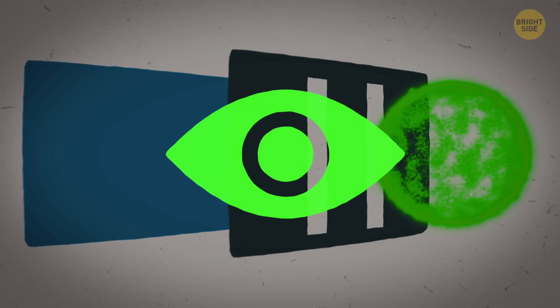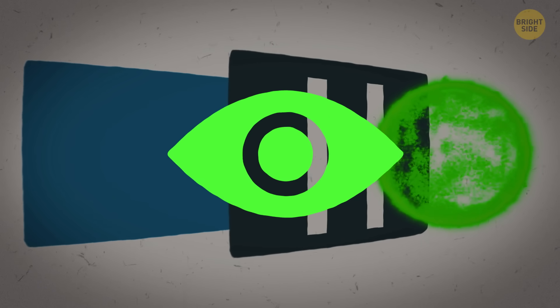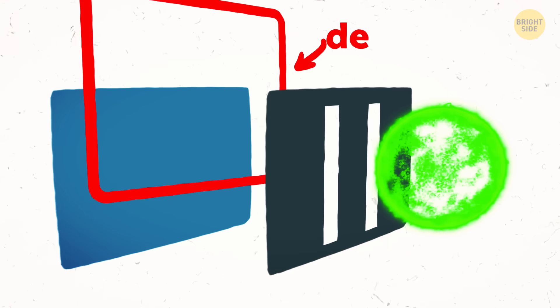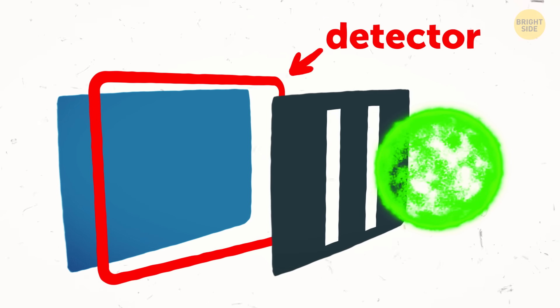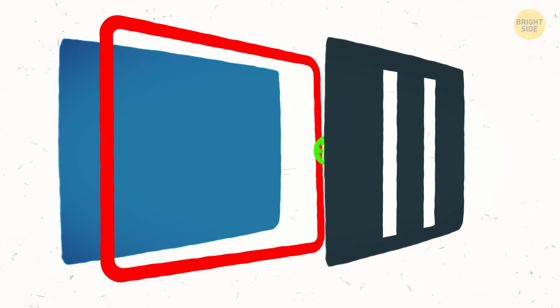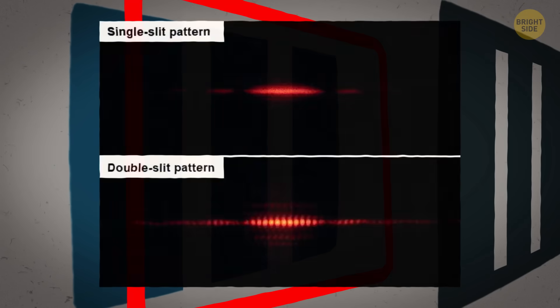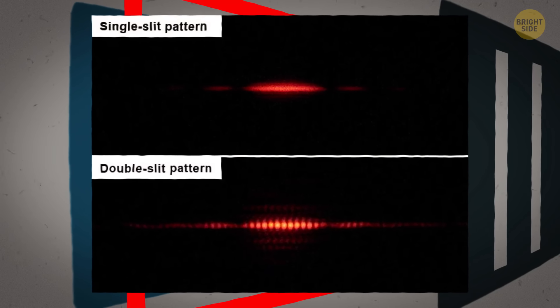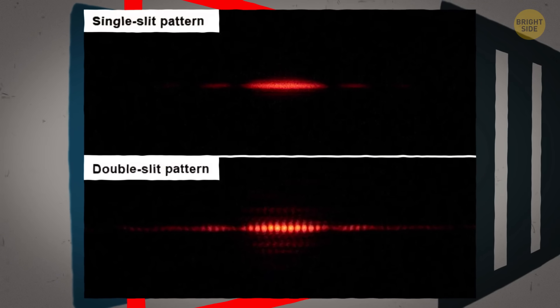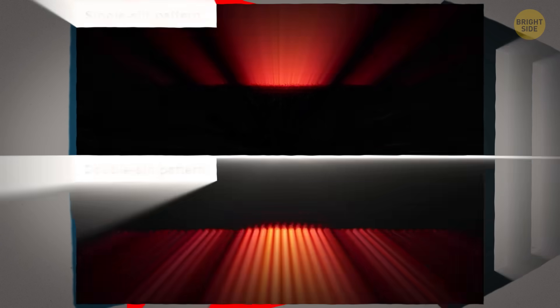Now, let's try to actually measure and directly observe what the particles do. We place a detector or a measuring device near the slits. And check this out. The light changes its behavior when we're watching it. The interference pattern disappears. And instead, we see two distinct bands on the screen. It behaved like particles, and went through one slit or the other, not through both of them at the same time.